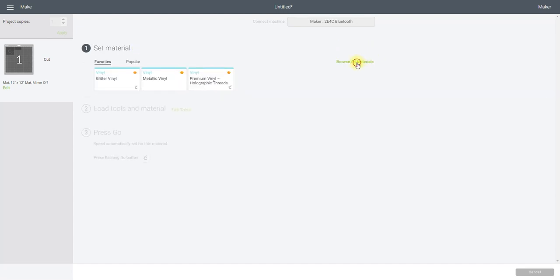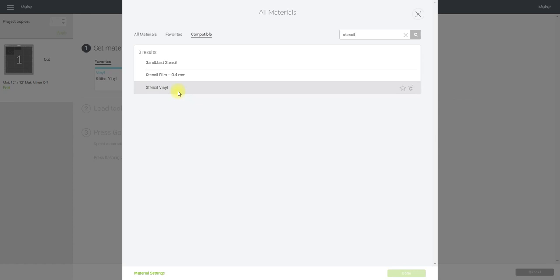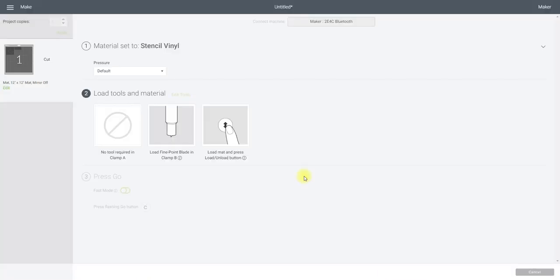I'm using my Maker today and I'm just going to browse all materials and search for stencil and I'm using Cricut stencil vinyl today. I can then add my stencil vinyl to my mat, put it in my machine and then it will cut out my stencil for me.